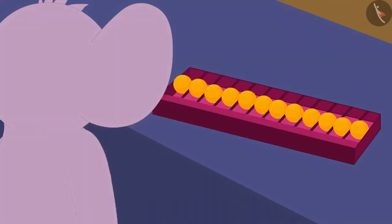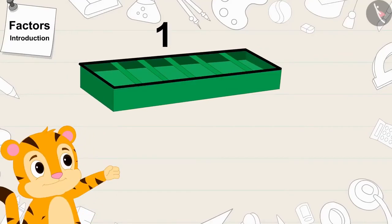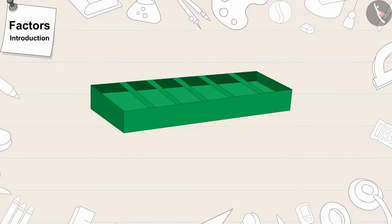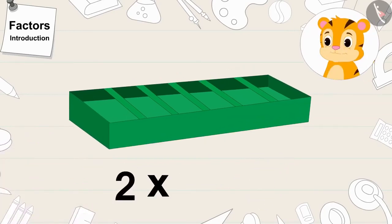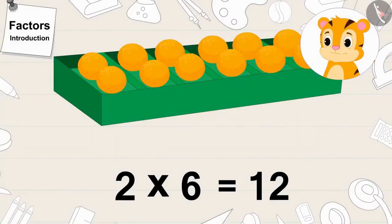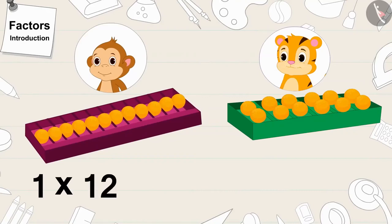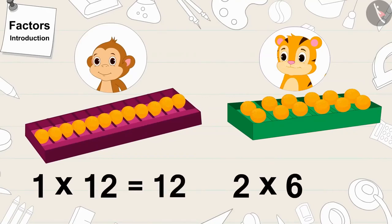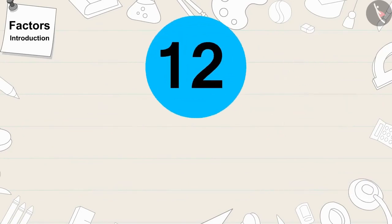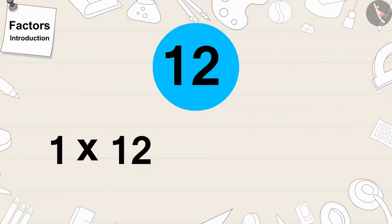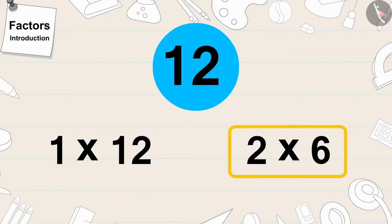Appu filled laddus in Babban's box. Now, Shere Khan gave his box to Appu. There is one vertical line in Shere Khan's box and six slots. Will Appu be able to keep twelve laddus in Shere Khan's box? Yes, two times six is twelve, so laddus can be kept in Shere Khan's box. In Babban's box there are one times twelve laddus and there are two times six, that is twelve laddus in Shere Khan's box. In other words, we can write twelve as one times twelve or two times six. One, twelve, two and six are the factors of twelve.